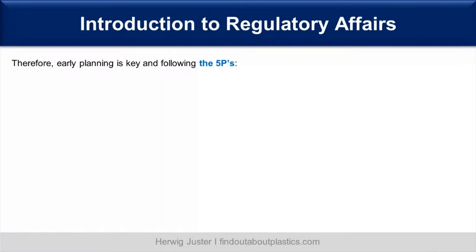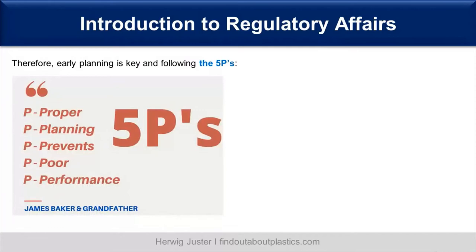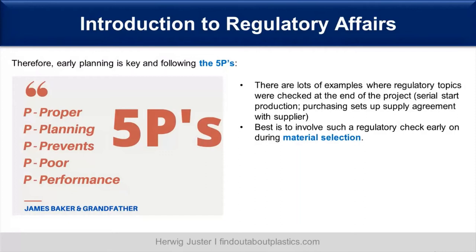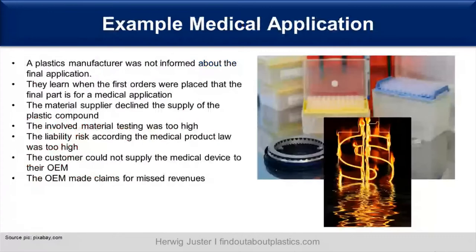Therefore, early planning is key. There are the so-called five P's: proper planning prevents poor performance, coined by James Baker and his grandfather. This is also very true for regulatory affairs. There are several examples where regulatory topics are checked at the end of a project, close to the serial start of production, when supply agreements are already set up. The best approach is to involve the regulatory check as early as possible, especially in the material selection phase.